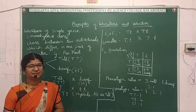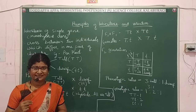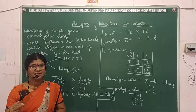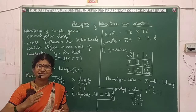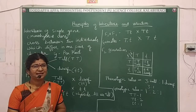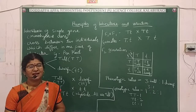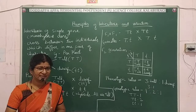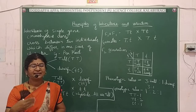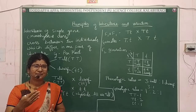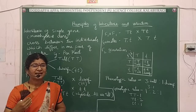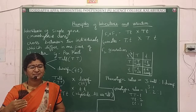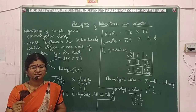Mendel did experiments in a very systematic way. First he selected one character at a time and did the experiments; second time he selected two characters together and did the experiment; and third time three characters together. Like this he conducted experiments in a systematic order.